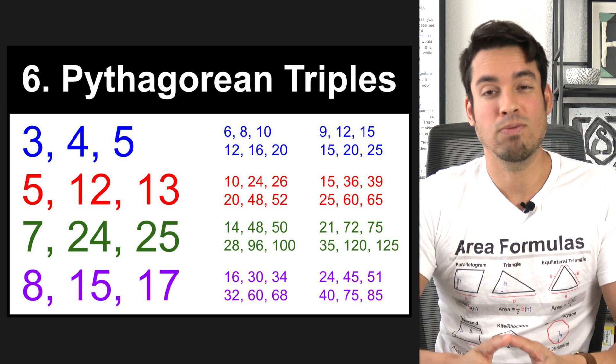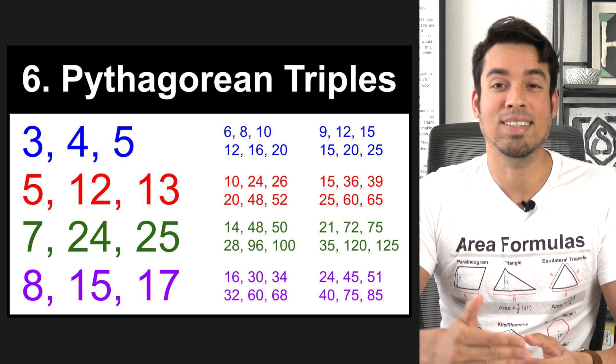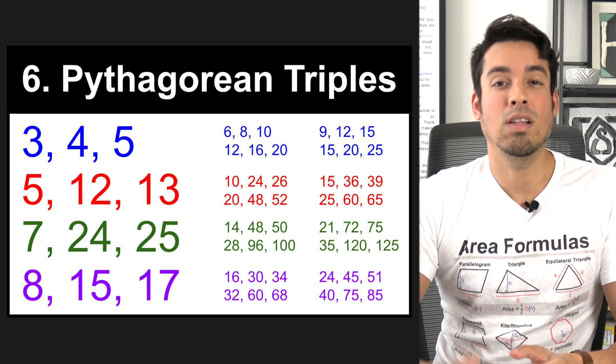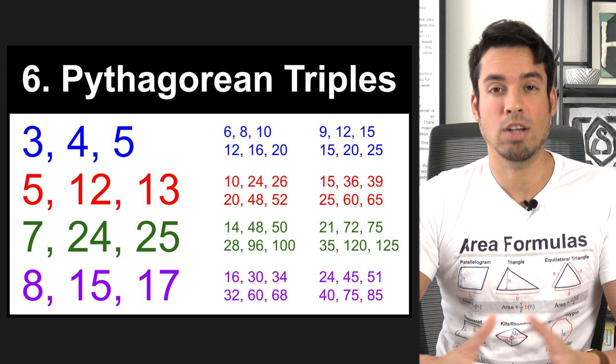So for example, if you take a 3, 4, 5, and you multiply it by two, you got a 6, 8, 10. That's still a legitimate Pythagorean triple for a right triangle.